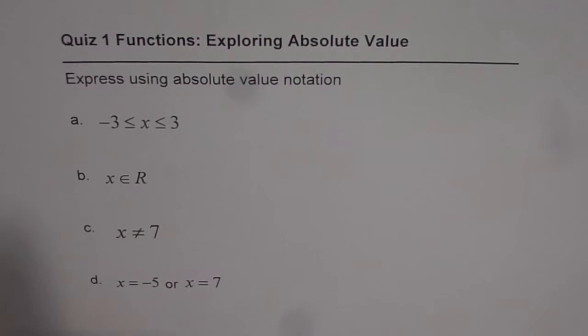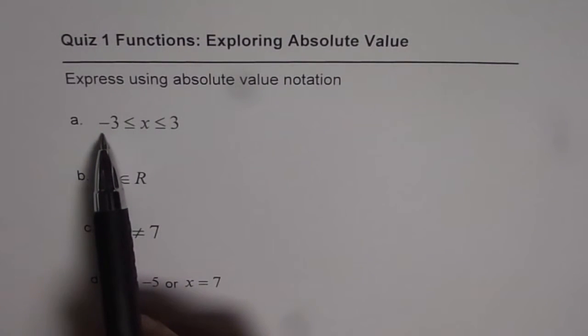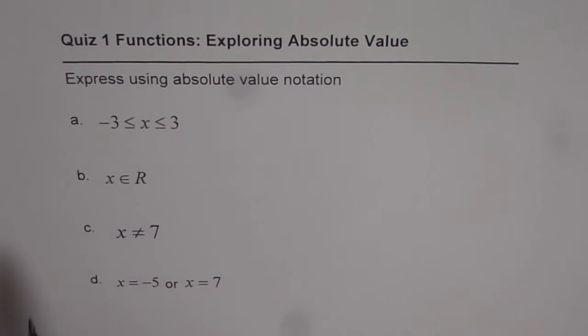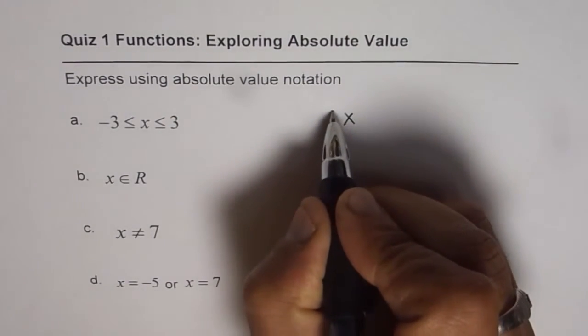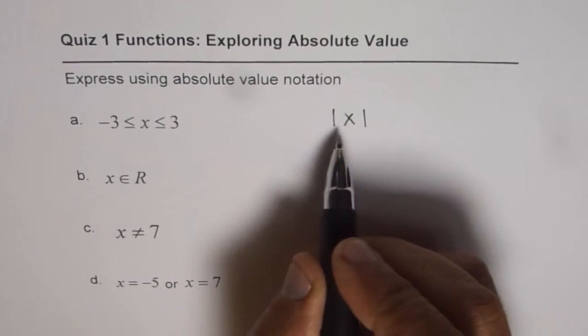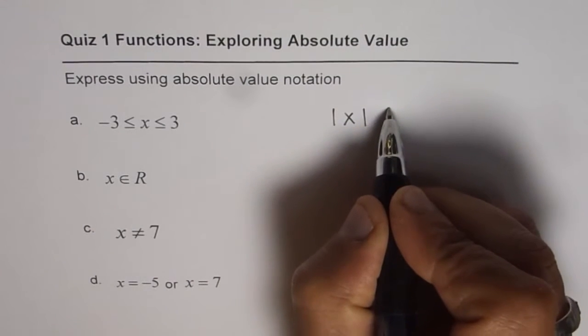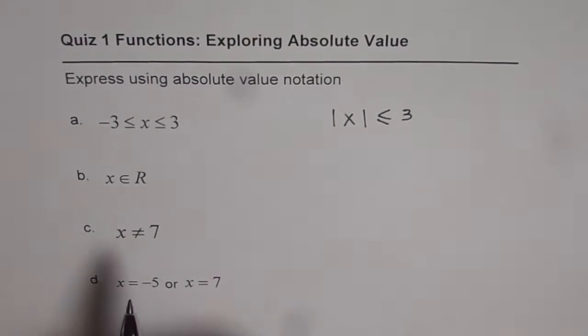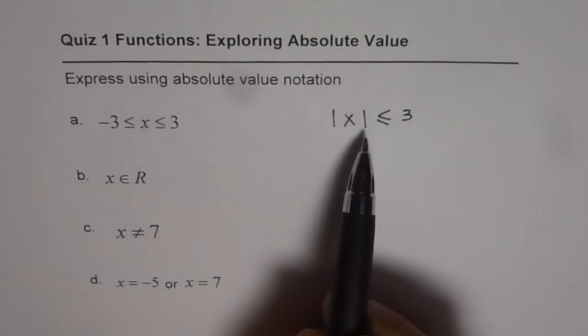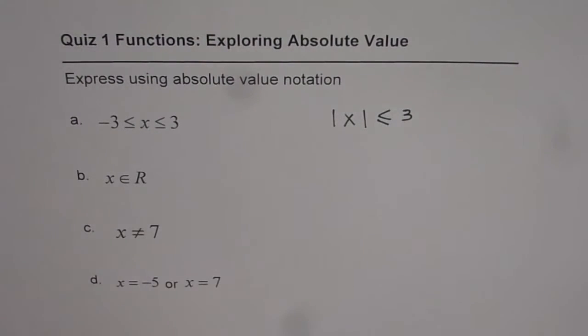The first one here is that x is between minus 3 and 3, both are included. So, from the absolute value definition, we can write the equation that absolute x is less than or equal to 3. It means that all the values between minus 3 and 3 will be included.